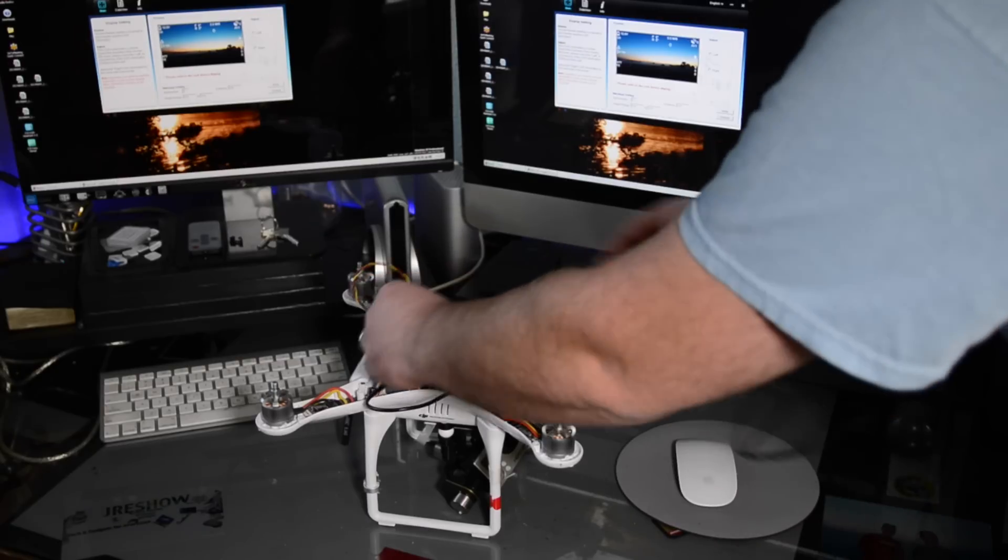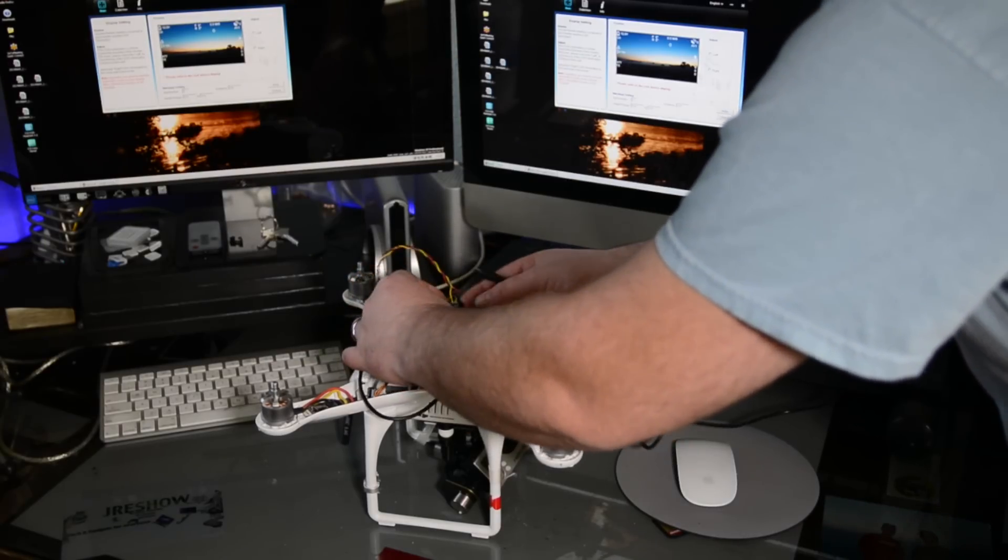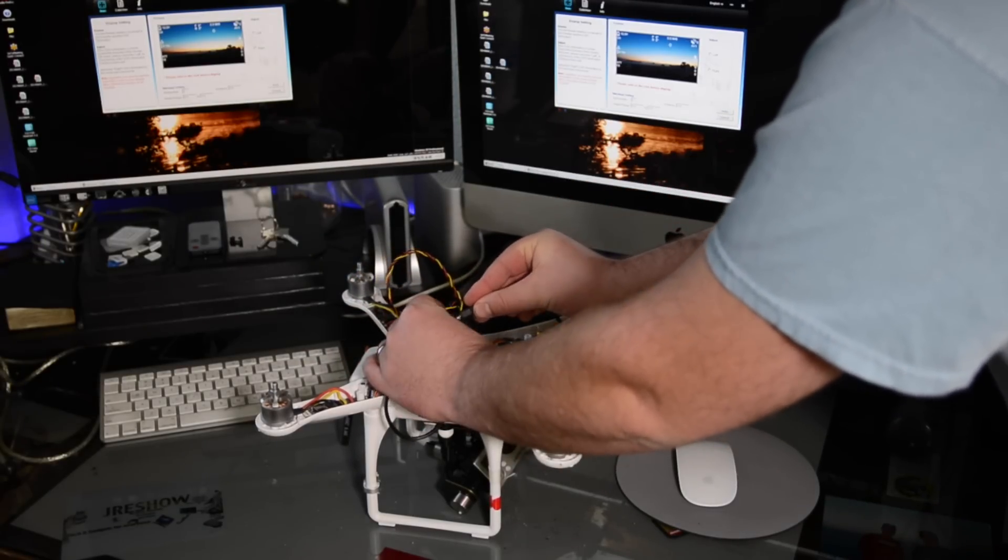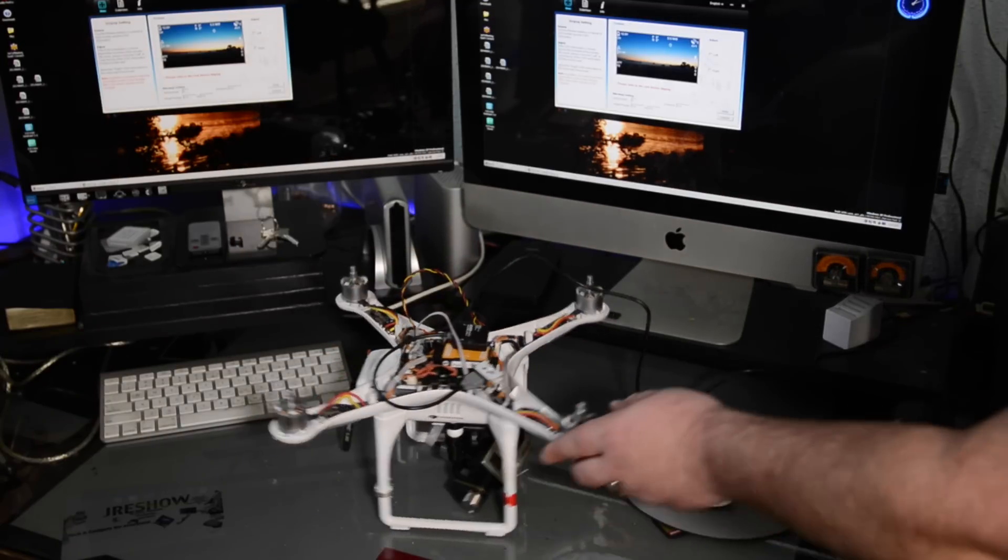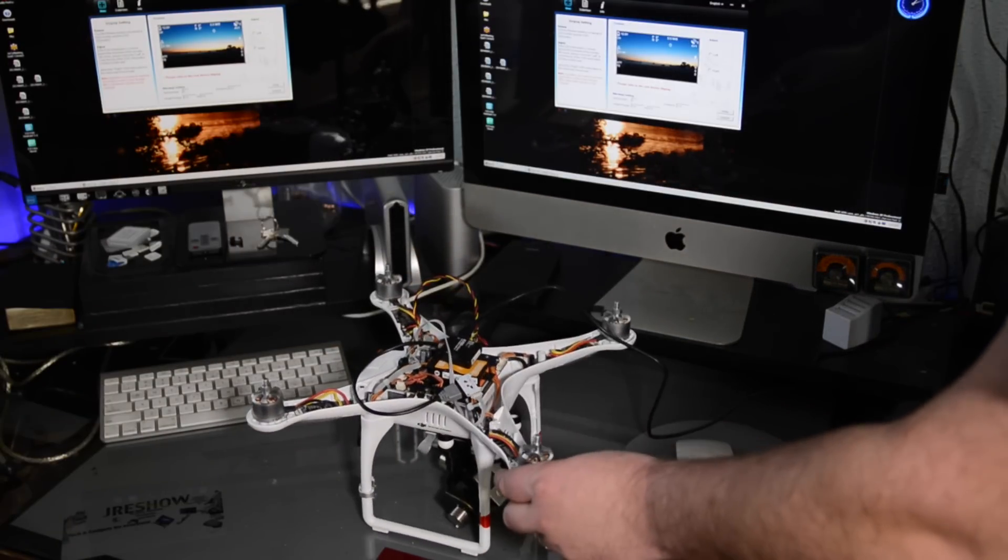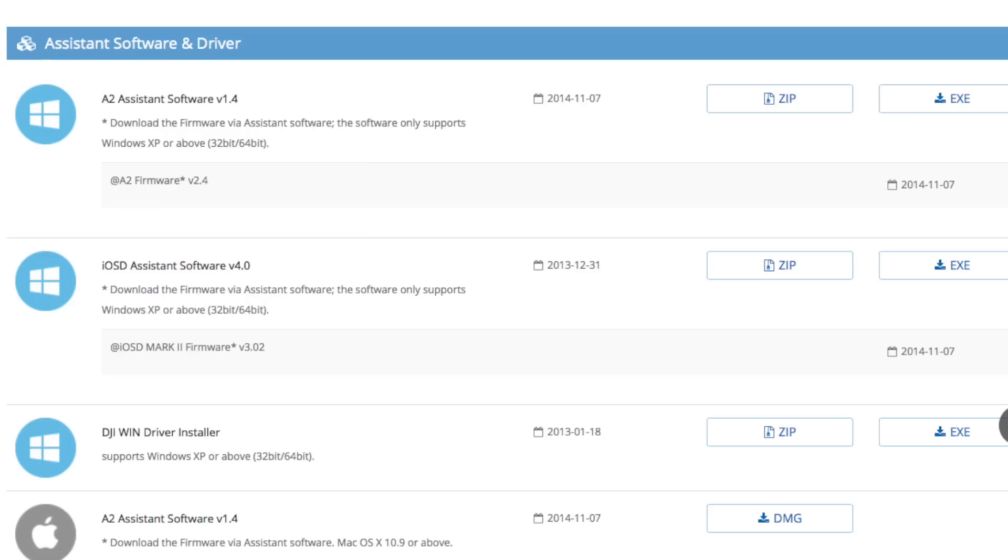Once you have the transmitter in place that's it we're basically done however we do need to check for updates if there's any updates on the iosd mini and to do that we'll need to download the iosd mini assistant from the DJI Phantom website.